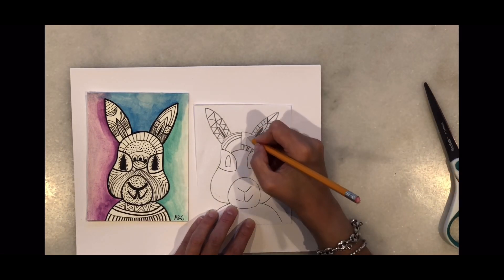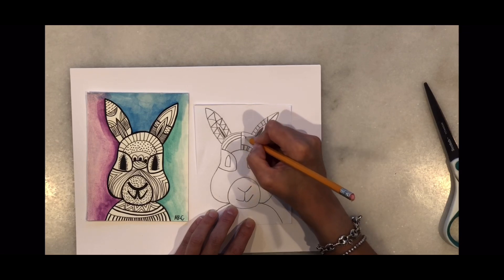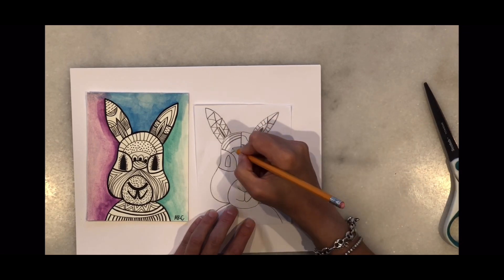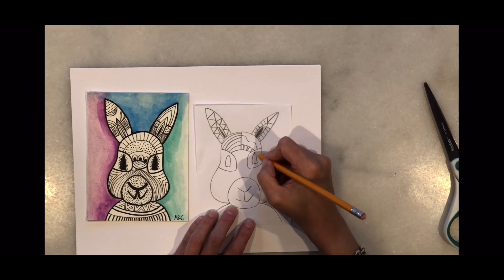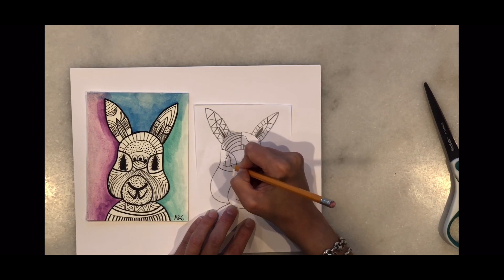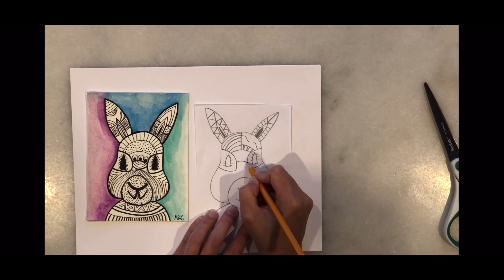The fun thing about Zentangle is that you can add many different patterns and that gives dynamic to your drawing. So my suggestion is divide your drawing into sections and then add different patterns. That makes your composition a lot more interesting and fun.